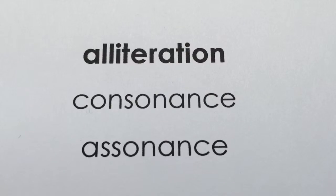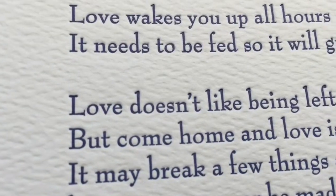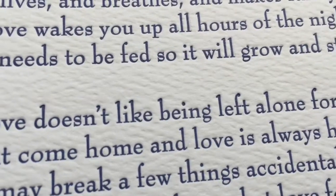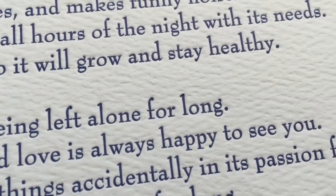Alliteration. I love alliteration in both types. There's consonants, where you imitate a consonant sound, and then there's assonance, which is when you imitate a vowel sound. There's a line in How Falling in Love is Like Owning a Dog that says, love doesn't like being left alone for long.